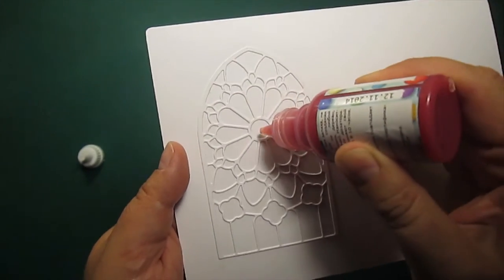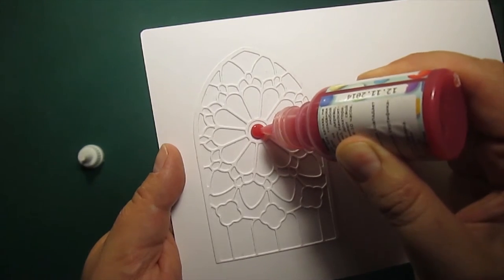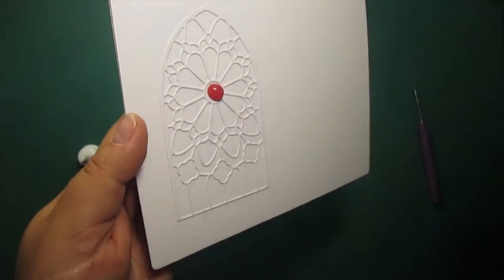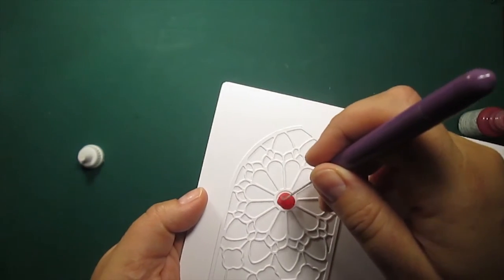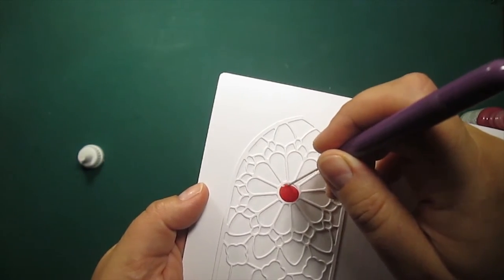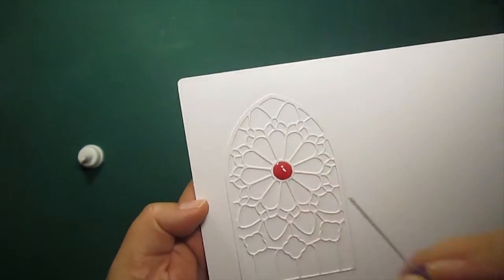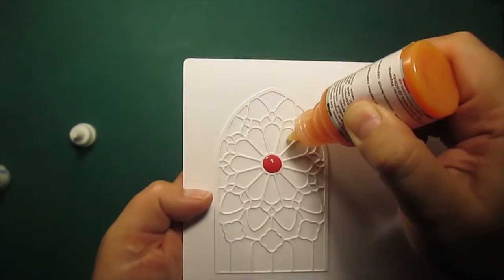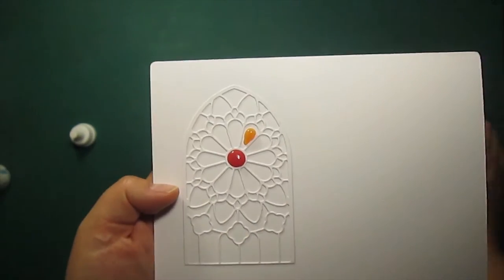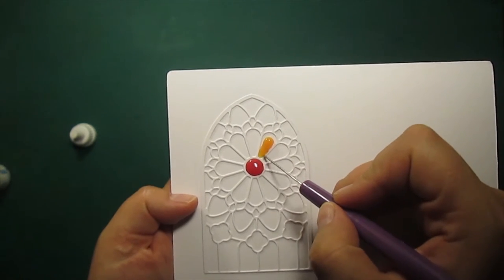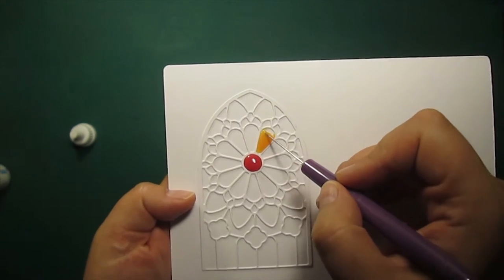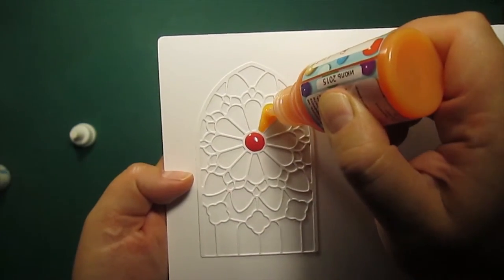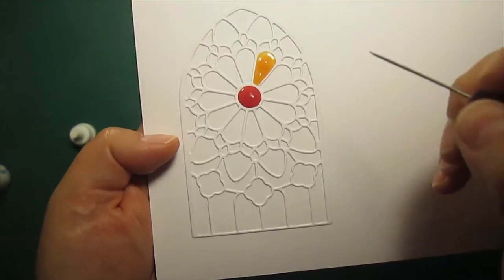Now to the fun part. I'm applying some generous amount of the medium onto the area that I want and then I'm using the piercing tool to spread it until it touches the borders of a die cut. The raised lines of a die cut will help keeping our glass drops within the borders. Then I'm proceeding with the next color. This is amber and it's the same process squeezing it and spreading it. I can also add some more medium for more dimension if needed.